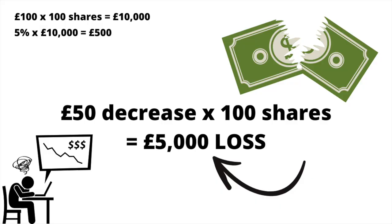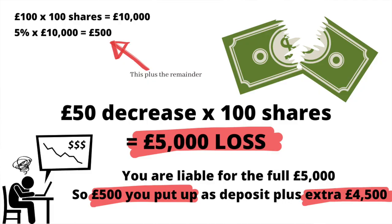However, if I'm wrong and the price drops by £50, that's a £5,000 loss for 100 shares. You might think - and this is the mistake a lot of people make - that you've only put up £500 so that's all you'll lose. No. You will lose not only that £500 deposit, you will have to find the remaining £4,500 to make up that £5,000 loss. You are liable to the brokerage for the whole position's loss.